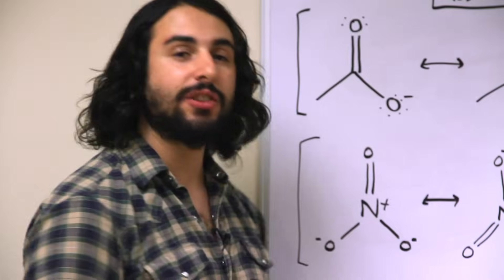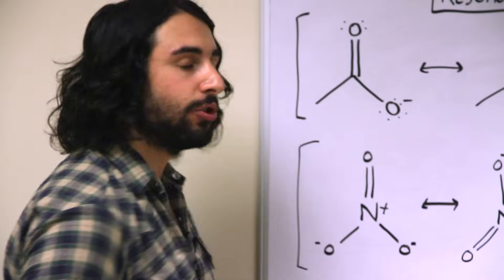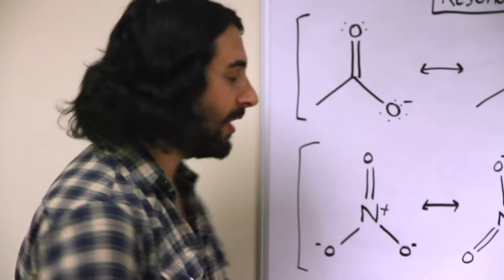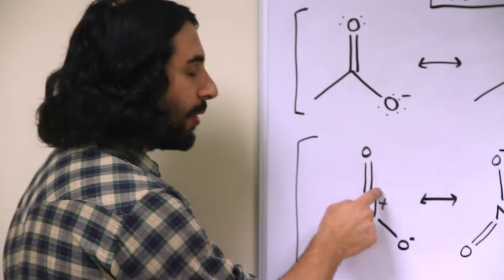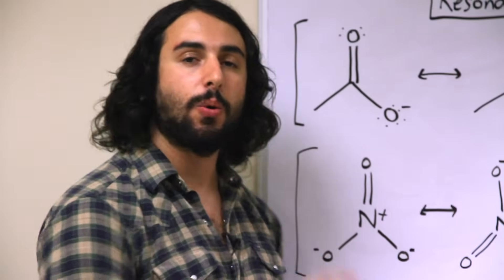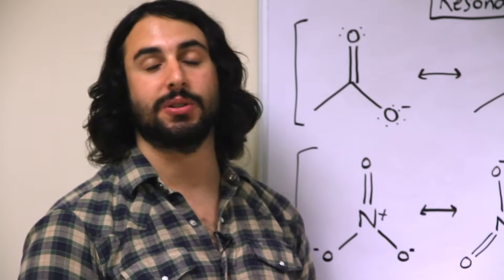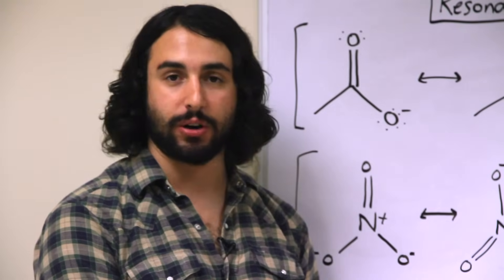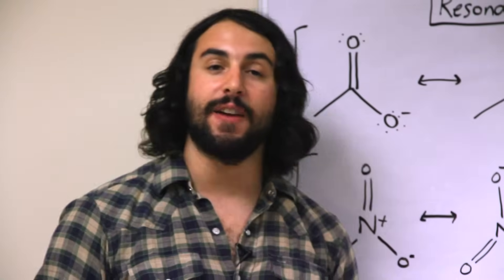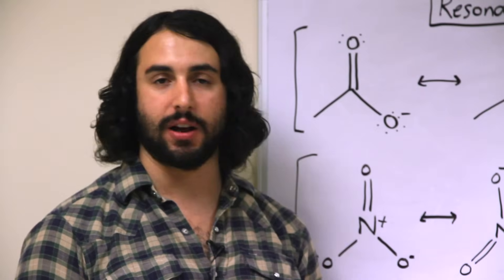Let's look at the nitrogen atom in the nitrate ion. Nitrogen ought to have five valence electrons, but here it is contributing only four to this Lewis dot structure, because it is participating in four covalent bonds — one here, one here, and then both a sigma and a pi bond in that double bond. So one per bond, four electrons that this nitrogen is contributing. Four is one less than five. One fewer negatively charged particle means that this nitrogen bears a formal positive charge.